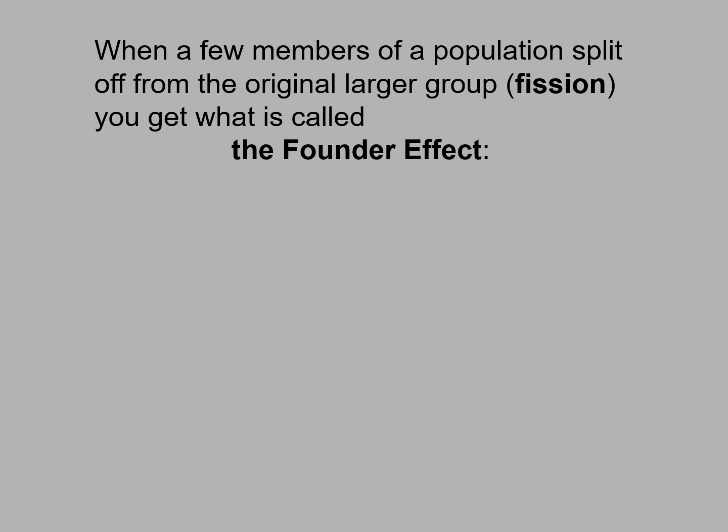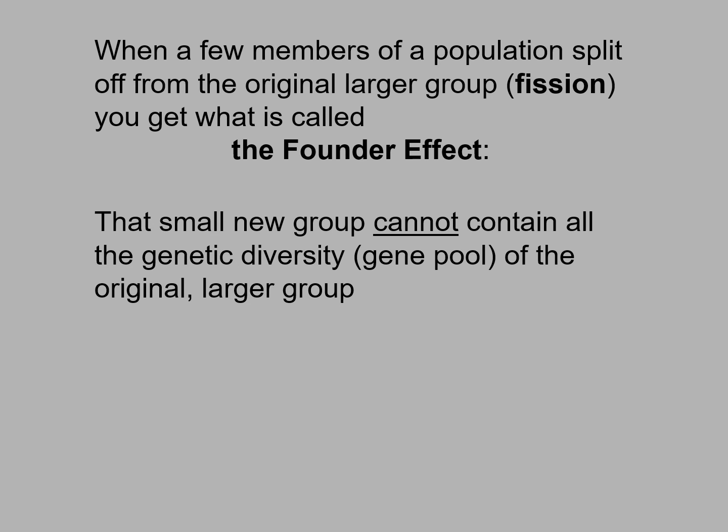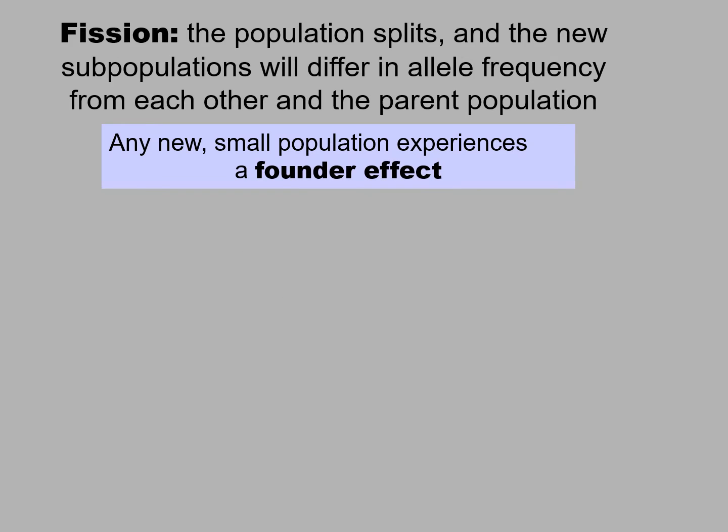When a few members of a population split off from an original larger group — what we call fissioning — you get what is called the founder effect: an immediate difference in the gene pool of the new small population. That new small group cannot contain all the genetic diversity of the original larger group; therefore, they will immediately have a very different gene pool. Fission refers to when a population splits, and immediately the new subpopulations will differ in allele frequency from each other and the parent population.